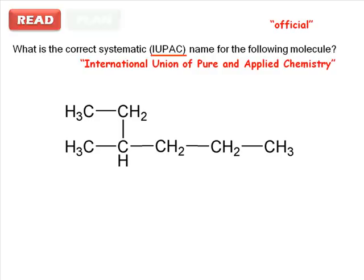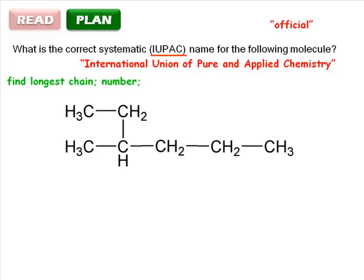Now plan your approach. First we need to find the longest chain of carbon atoms, and choose the correct base for the IUPAC name accordingly. Second, number the chain so that the first substituent has the lowest numerical value. And third, add the substituents as prefixes in alphabetical order.